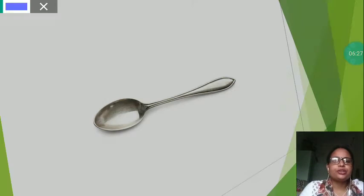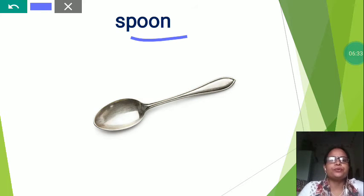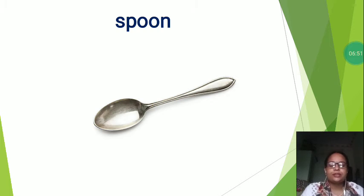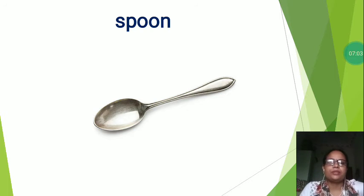Now the next is this is the picture of a spoon. S-P-O-O-N, spoon. A spoon is a utensil consisting of a small shallow bowl at the end of a handle. Spoons are also used in food preparation to measure, mix, stir and toss food for serving. So dear students, this is a utensil — spoon. With the help of a spoon, we eat liquid food.